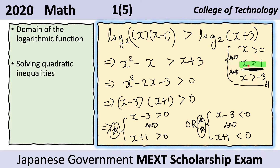Now we can proceed to simplifying the inequality. We notice that on both sides we have log base two, and because the logarithmic function is increasing, we can remove the log base two. We are left with x times x minus one is greater than x plus three.